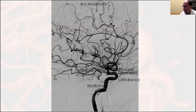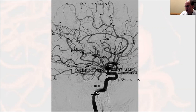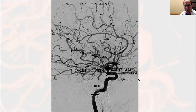Getting into the ICA segments: I've labeled them according to the Bouthillier classification from 1997, the best and most reproducible anatomic description. From proximal to distal: the petrous segment follows an up-across-up course; the cavernous segment has an initial superior, anterior, then superior course. These are two truly extradural intracranial segments — aneurysms here cannot cause subarachnoid hemorrhage but can cause mass effect symptoms.